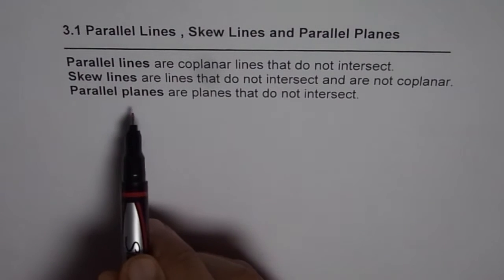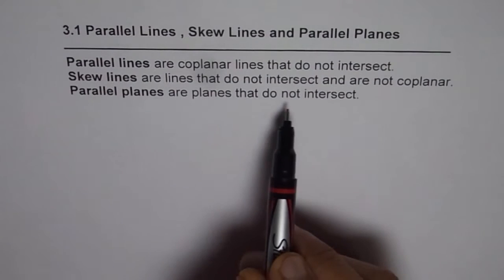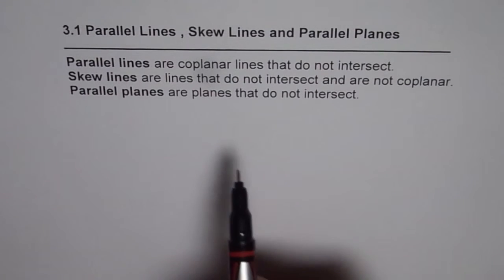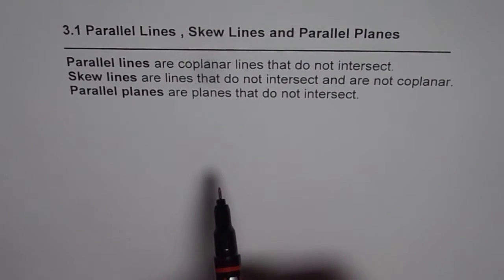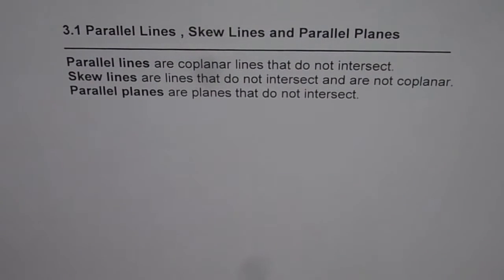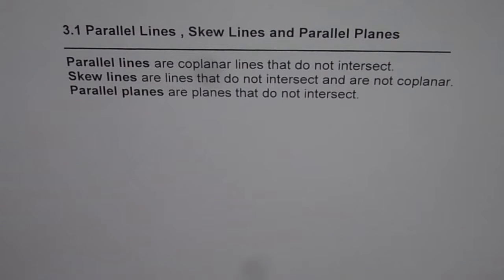Parallel planes are planes that do not intersect. Think about the floor and ceiling — these are two different planes which do not intersect. Any line on the floor and any line on the ceiling will never intersect, so those are skew lines. That is how we define these three terms.